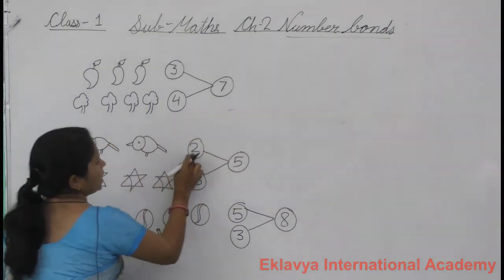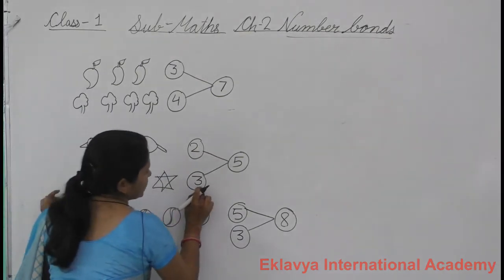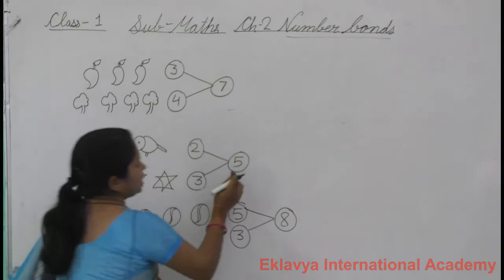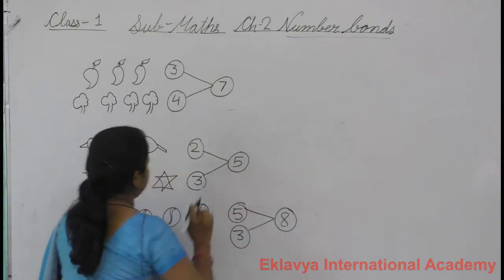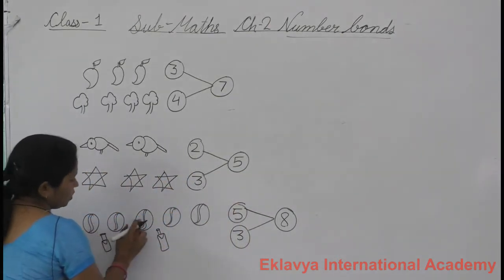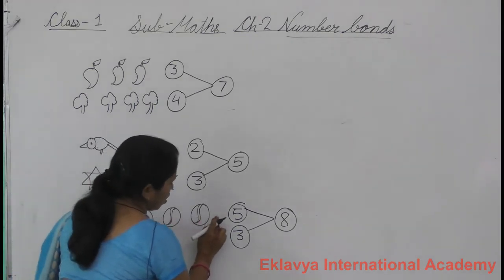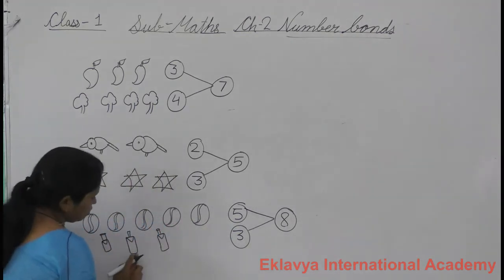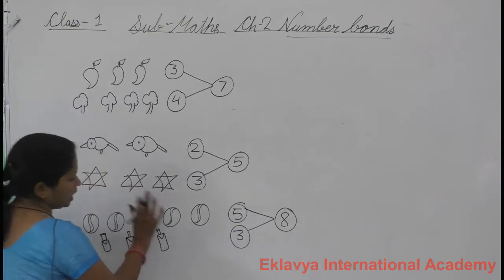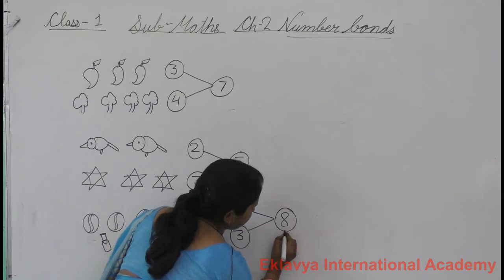Two birds — one, two. Three stars — one, two, three. And count both, there are five. Numbers: one, two, three, four, five. Five balls — one, two, three. Three bats. And both are counted. Put number eight.